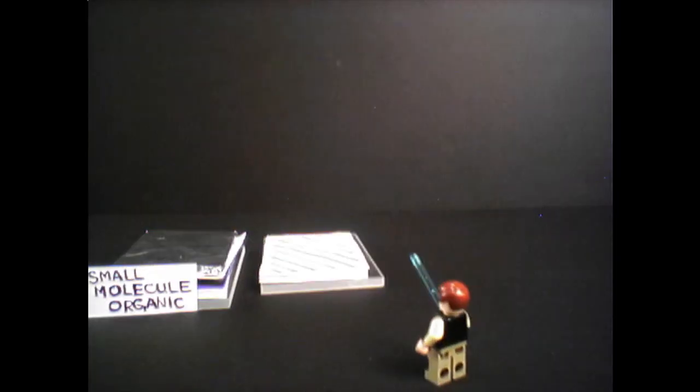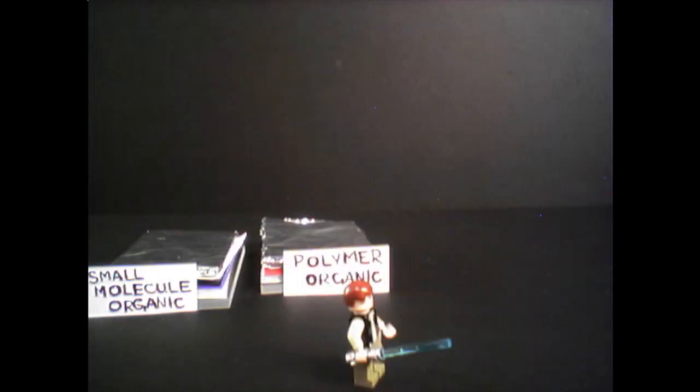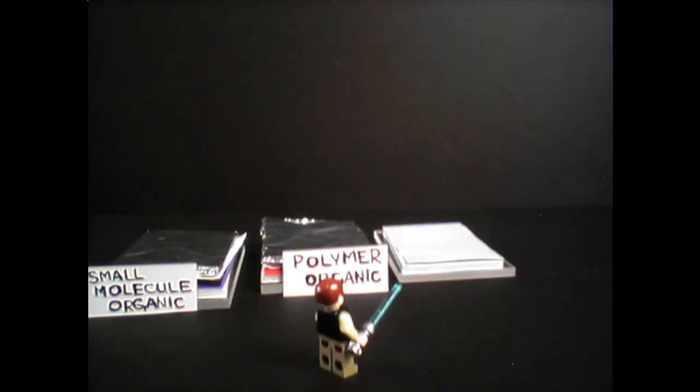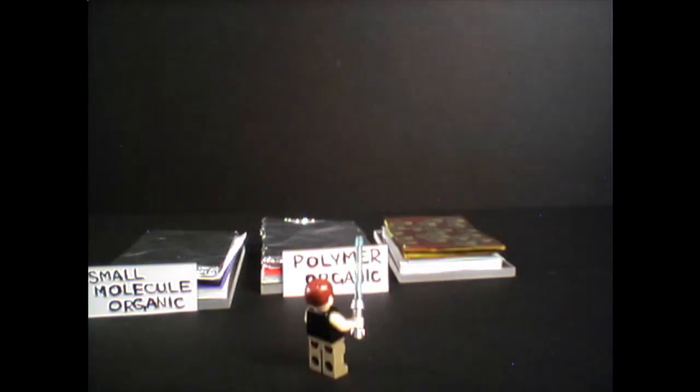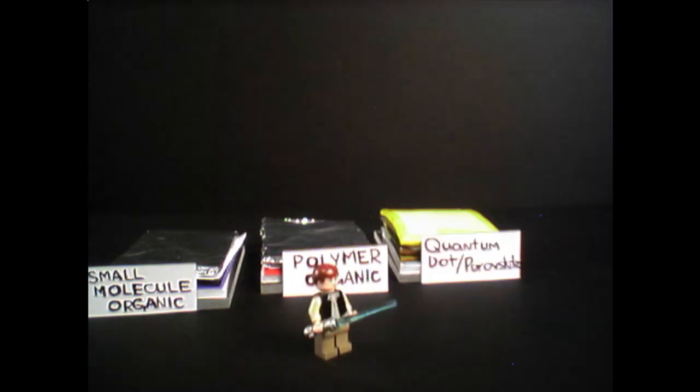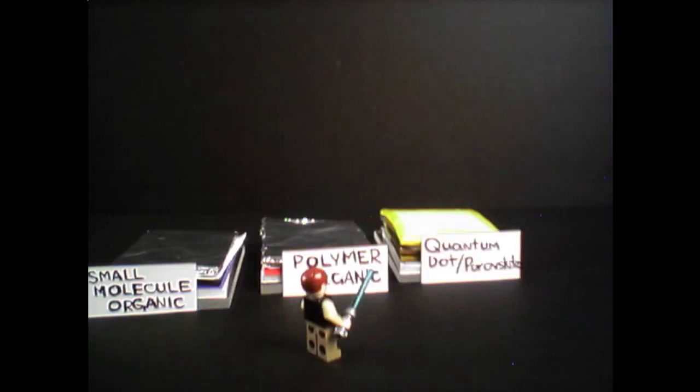We can make a solar cell out of long chains of organic molecules known as polymers, or tiny nanocrystals called quantum dots, or even hybrid semiconductors with organic and inorganic components. These materials are especially cool, because they can be dissolved in a solution, just like ink. So eventually we might be able to print them on flexible plastic sheets, the same way newspapers are printed on paper. Crazy! Printable solar cells. Imagine that, Han!